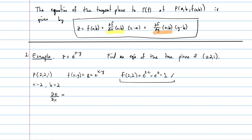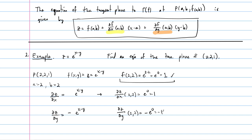Now we have to compute our derivatives. The derivative dz/dx of e to the (x minus y) — by the chain rule multiplying by the x-derivative of the exponent, which is just 1 — gives us e to the (x minus y). Similarly, dz/dy gives us e to the (x minus y) times the y-derivative of the exponent, which is negative 1, so we get negative e to the (x minus y). Evaluating at (2,2): dz/dx at (2,2) is e to the 0 equals positive 1, and dz/dy at (2,2) is negative e to the 0, equals negative 1.